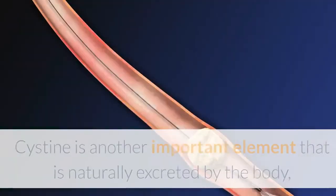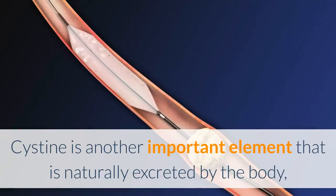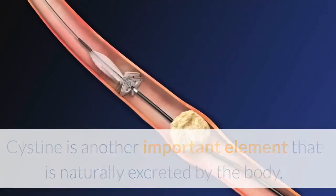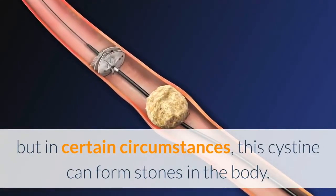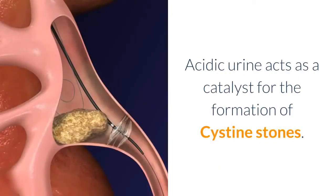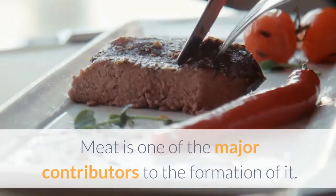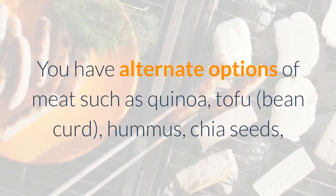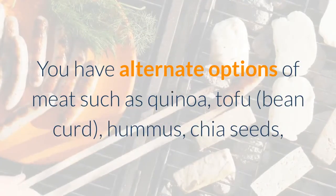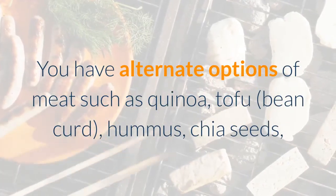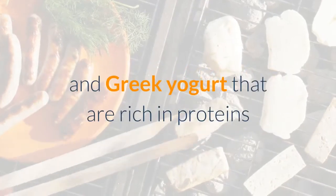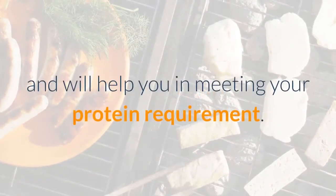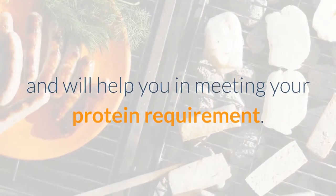A decrease in citrate significantly increases the deposition of salts to form stones. Cysteine is another important element naturally excreted by the body, but in certain circumstances it can form stones. Acidic urine acts as a catalyst for the formation of cysteine stones, and meat is a major contributor. You have alternate protein options such as quinoa, tofu, bean curd, hummus, chia seeds, and Greek yogurt, which are rich in proteins and will meet your protein requirements.